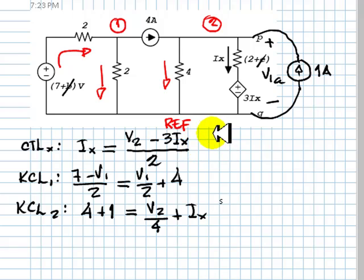We have three equations and three unknowns, V1, V2, and Ix. We enter them in the calculator and solve for them.